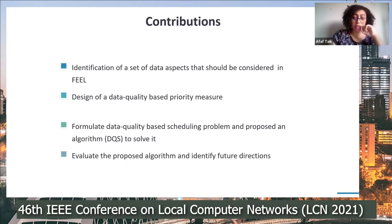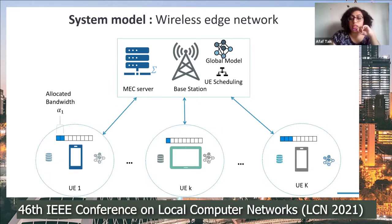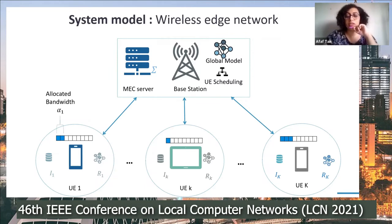To explain our proposed algorithm, we consider a wireless edge network composed of K user equipment, a MEC server, and a base station. Each user equipment has a local dataset, and when scheduled, it is allocated a fraction of the bandwidth alpha and trains a local model. To carefully choose participants, we define a diversity index evaluated on the local dataset and a reliability measure called reputation, evaluated on the overall model.